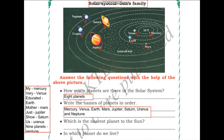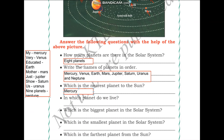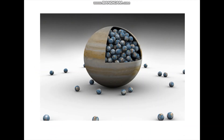The nearest planet to the Sun is Mercury. Mercury is the planet closest to the Sun. Which is the biggest planet in the solar system? The answer is Jupiter — Jupiter is the biggest planet. In fact, Jupiter is so big that more than 1,300 Earths can fit inside it.